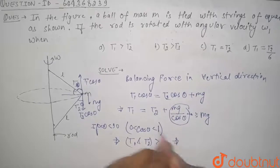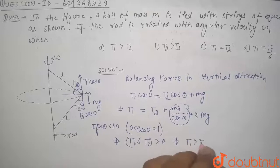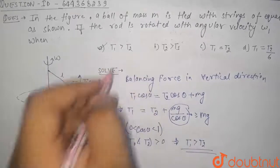So from here we can say that since T1 and T2 are positive, then we can say that T1 should be greater than T2. So correct option is option A. Thank you guys.